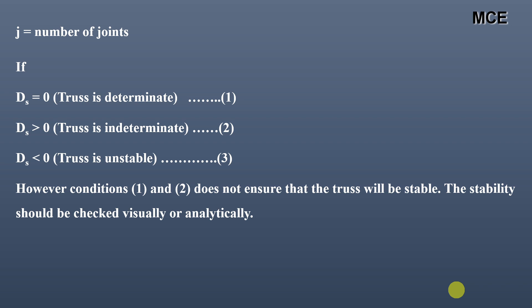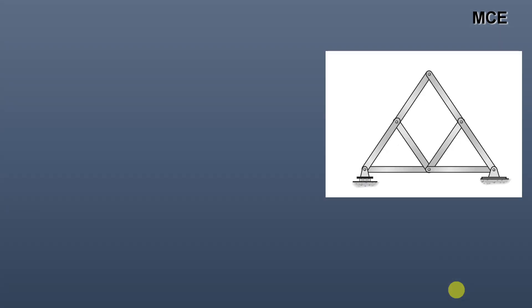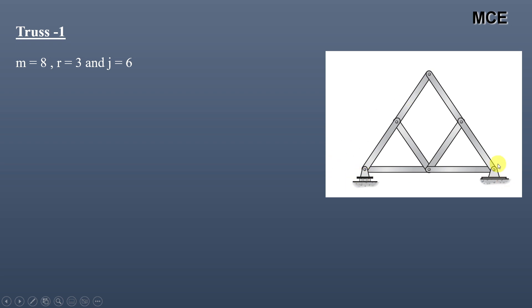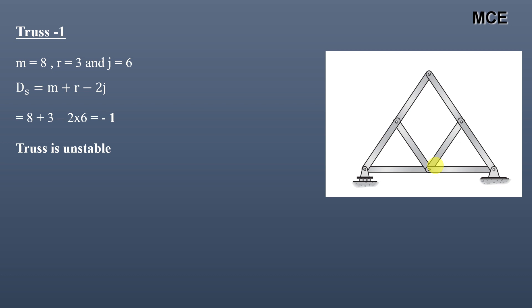Now we will solve some examples to better understand the concept. For truss one, this truss has a total of 8 members, 3 reactions (one at the roller and two at the hinge), and 6 joints. Putting values into the equation gives ds = −1. Since ds is less than zero, this truss is unstable. When a truss is unstable, we don't need to find external or internal static indeterminacy.